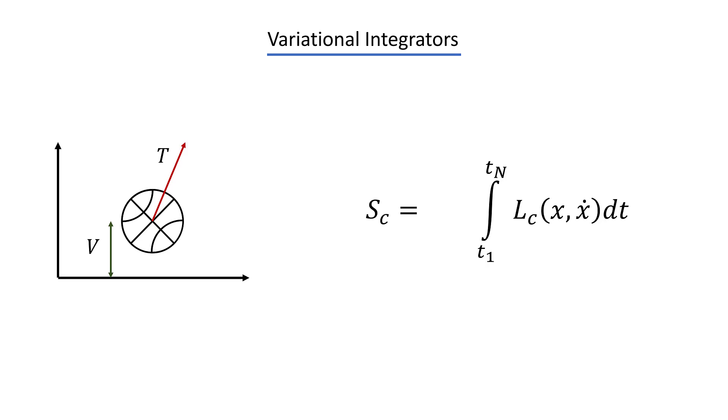This difference is typically called the Lagrangian and what we can do now is, we can take the integral over time of this Lagrangian and we call this the action of the system. And again, a large action simply means our system is very lively. Now, some time ago it was discovered that nature follows a principle of least action, which means it tries to be as still as possible and avoid being very lively. If we translate this to mathematics, this simply means that we get the physically correct trajectory of a system simply by minimizing its action over time.